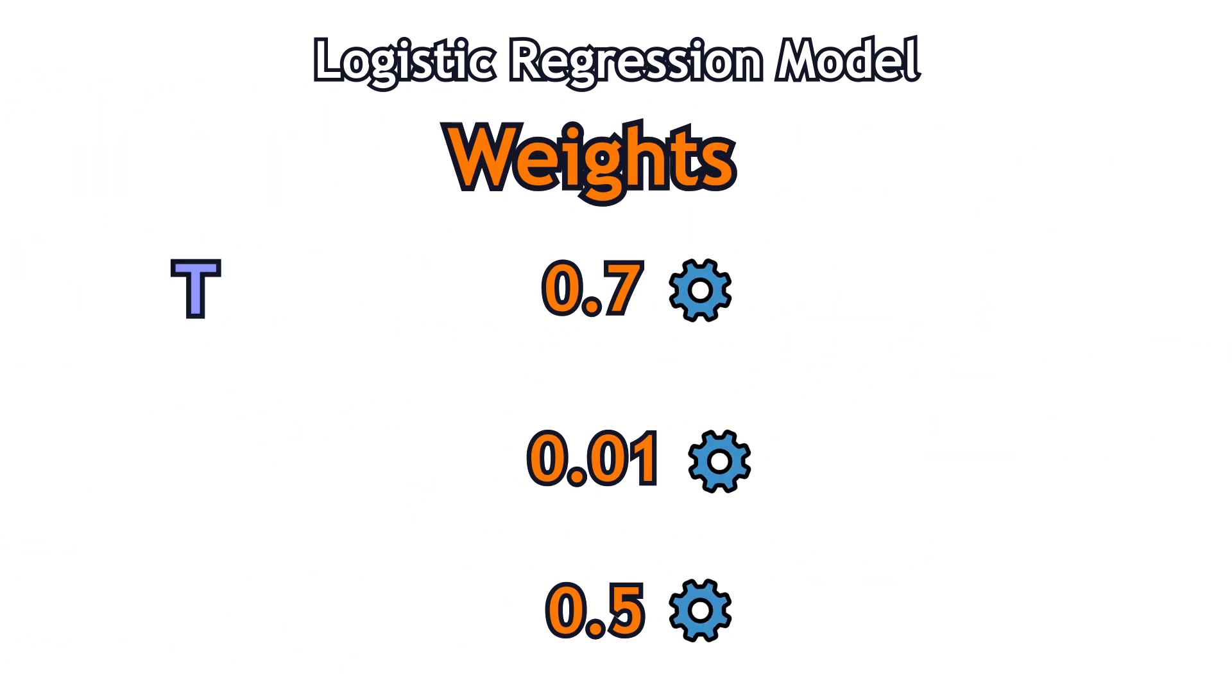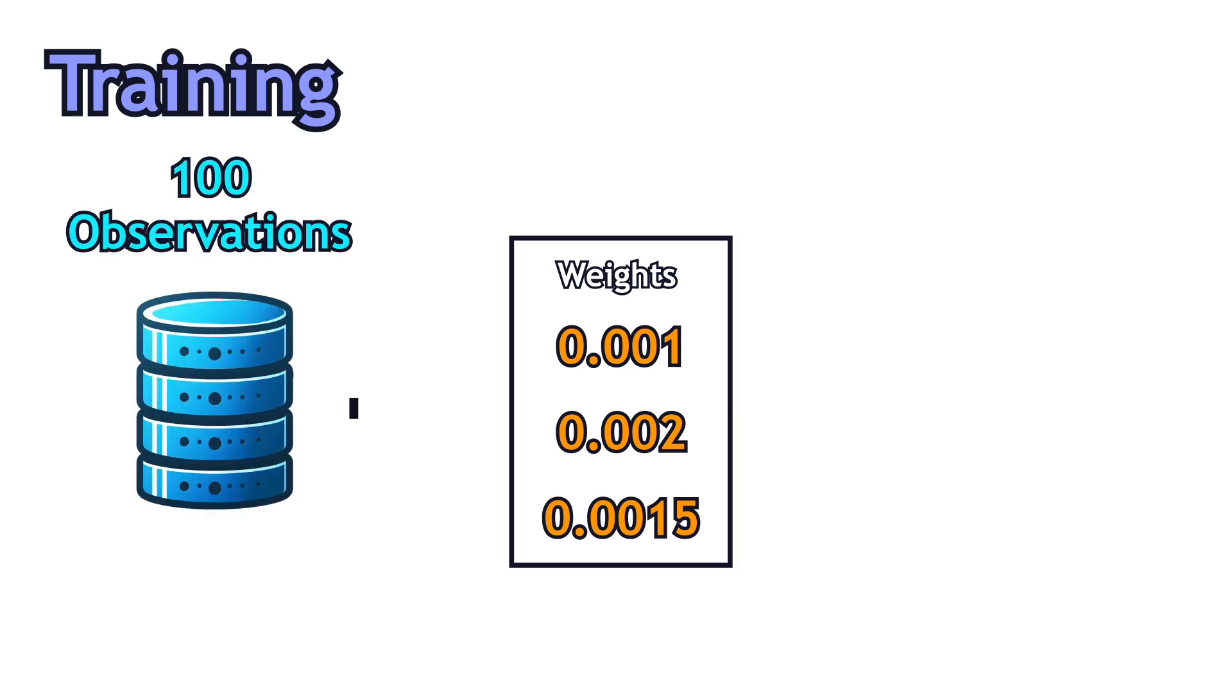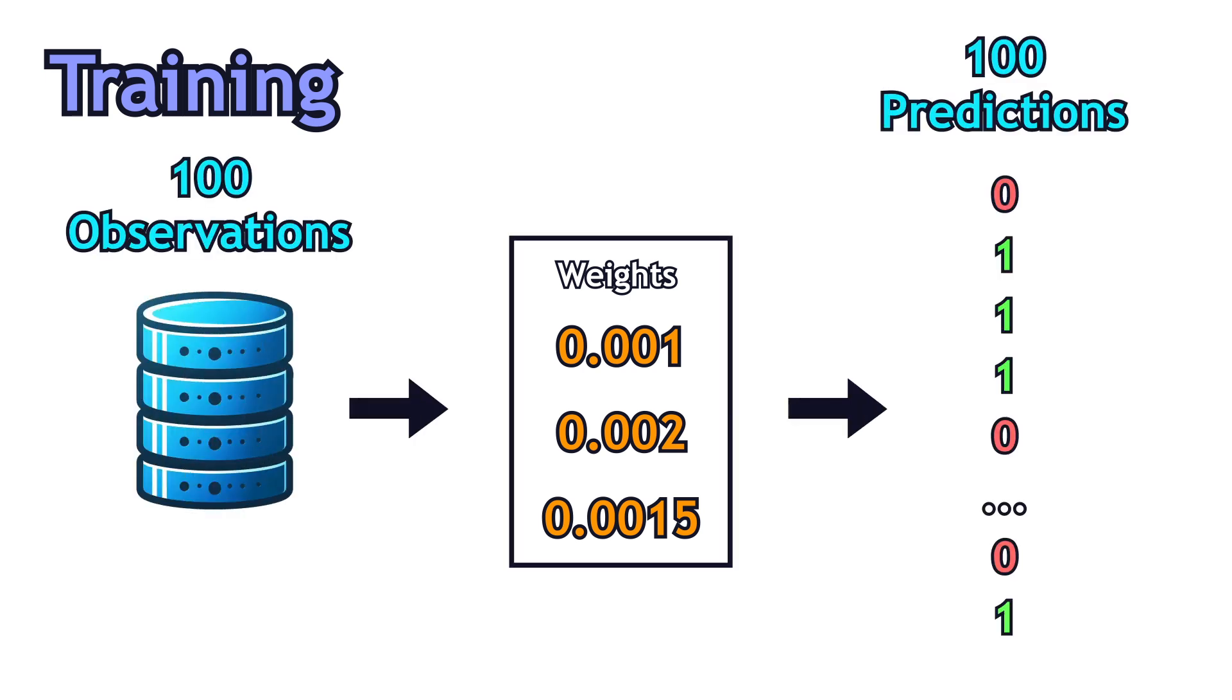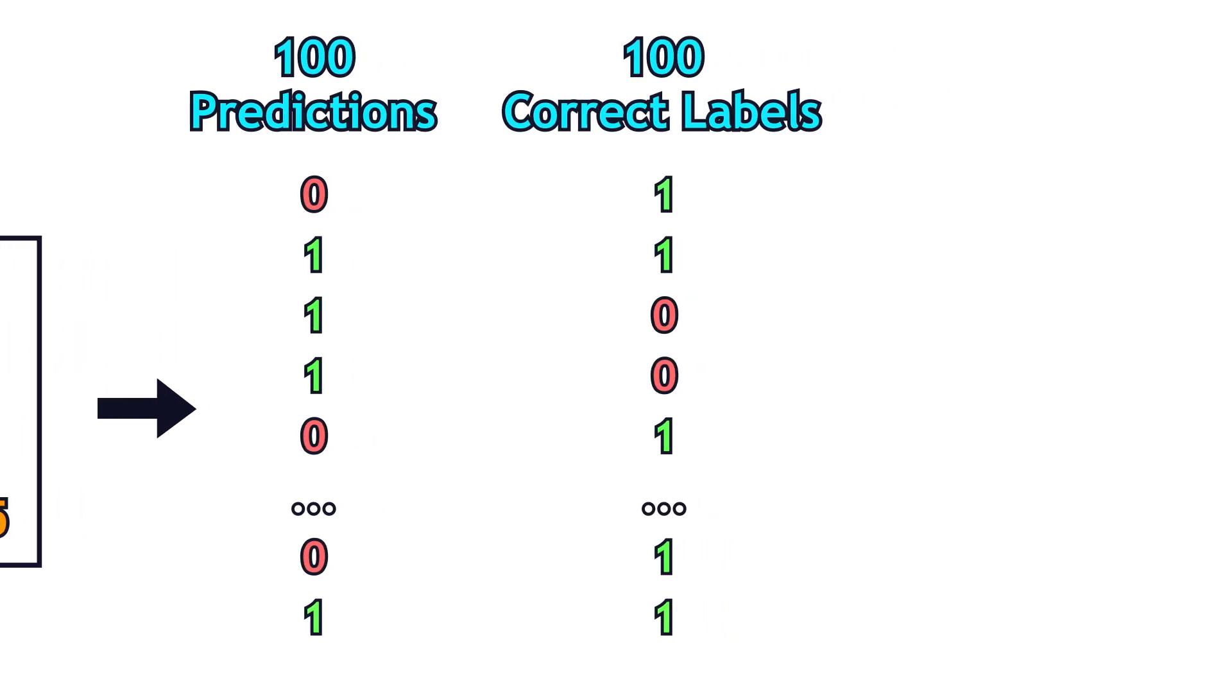But you can't just guess those weights. They should be trained. The training process happens as follows. Weights are initialized randomly as small numbers. The model predicts all the observations in the training dataset. An error is calculated based on the mispredictions.